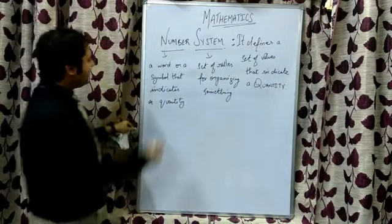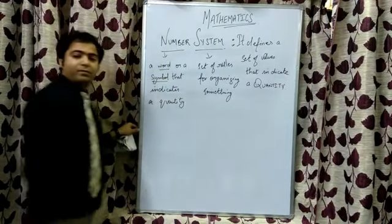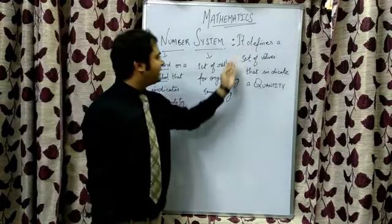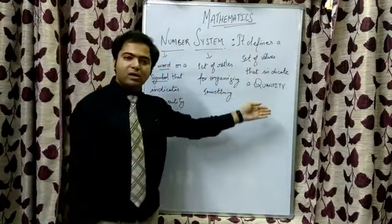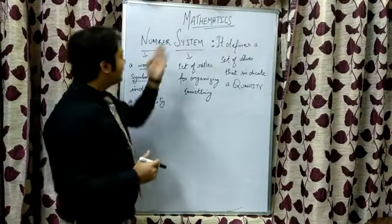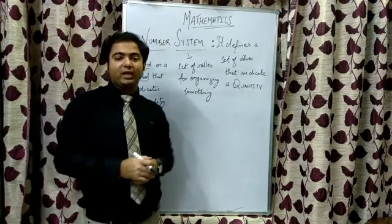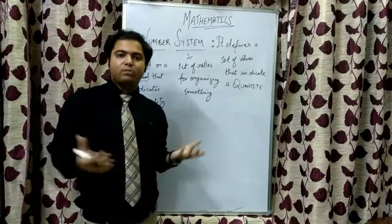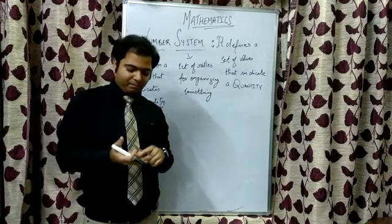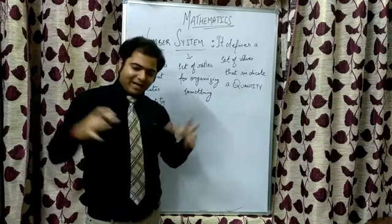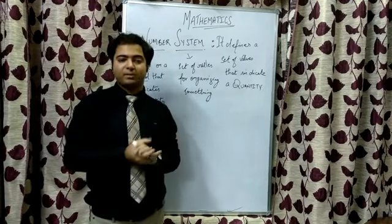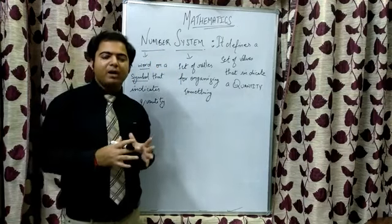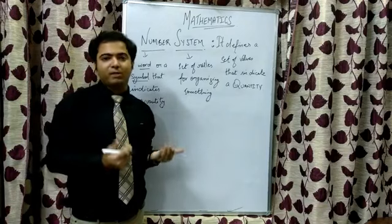A number system defines a set of values that indicate a quantity with the help of symbols and words. To understand number system in a much better way, we can compare it with a computer system, which contains various modules clubbed together like mouse, keyboard, CPU, and monitor — they are all clipped together and it is termed as a computer system. In the same way, a number system consists of various numbers that are clubbed up, forming what is called a number system.